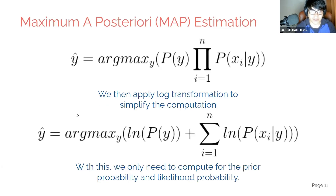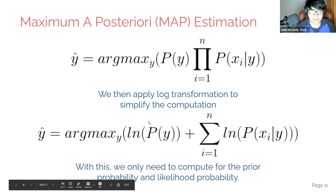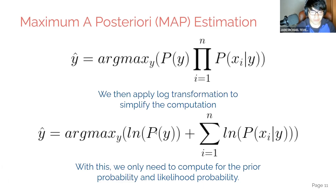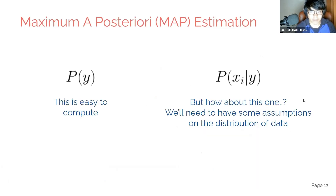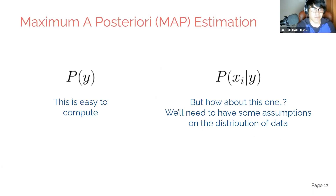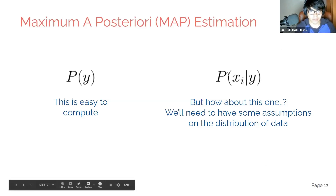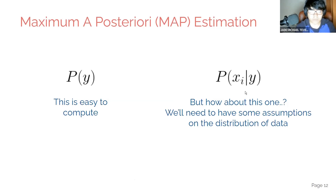Remember this equation. What we need to compute are the prior and the likelihood. The prior is very easy — it's just the number of instances for that class over the total number of samples in the dataset. But for the likelihood — the probability of a certain feature given Y — we'll need to make some assumptions about the distribution of our data.